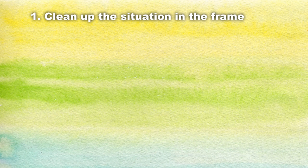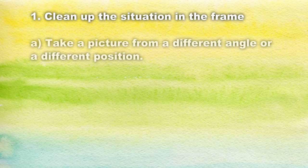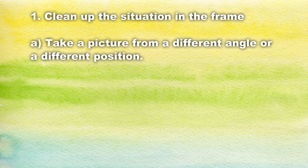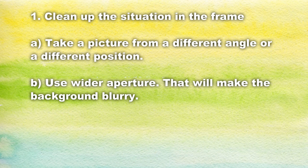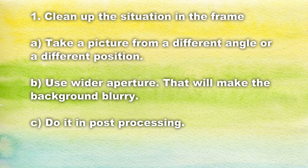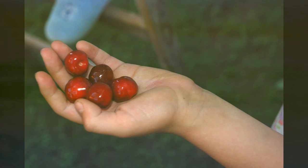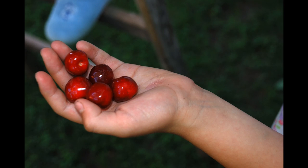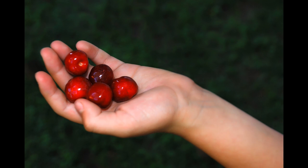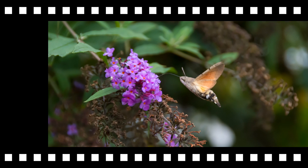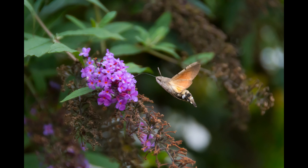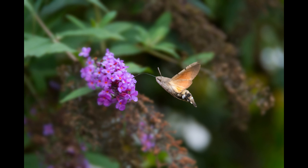First of all, clean up the situation in the frame. The picture should tell the story, and if you have any objects in the picture that are not adding to that story, then you don't really need these objects. You can avoid them by moving and taking a picture from a different angle, or if the background is just too busy, try to use a wider aperture to make it blurry, and if you can't do even that, try to do it in post-processing. For example, the hand with cherries — I just removed those background objects during post-processing. And this picture with the moth — I made the background blurry in post-processing so the moth becomes clearly the main subject.